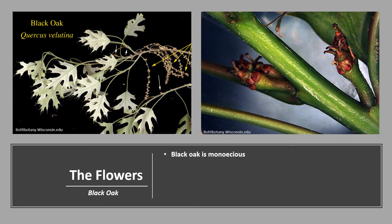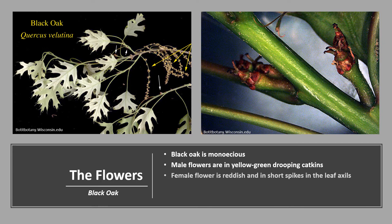Black oak is monoecious, meaning a tree has both male and female flowers. The male flowers are in yellow-green drooping catkins — you can see in the photo on the left the yellow arrows pointing to the male flowers. The female flowers are reddish and in short spikes in the leaf axils; in the photo on the left, the white arrows are pointing to the female flowers. The flowers bloom in spring between April and May, and are wind-pollinated.